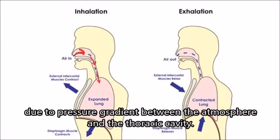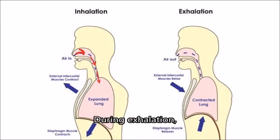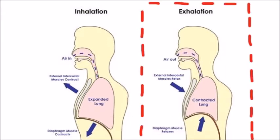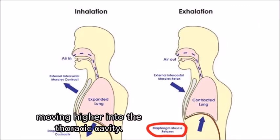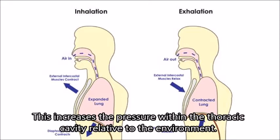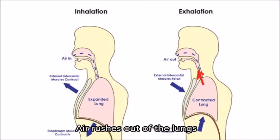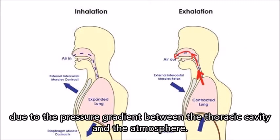The higher atmospheric pressure will allow air to rush into the lungs due to the pressure gradient between the atmosphere and the thoracic cavity. During exhalation, the diaphragm relaxes, moving higher into the thoracic cavity. This increases the pressure within the thoracic cavity relative to the environment, and air rushes out of the lungs due to the pressure gradient.